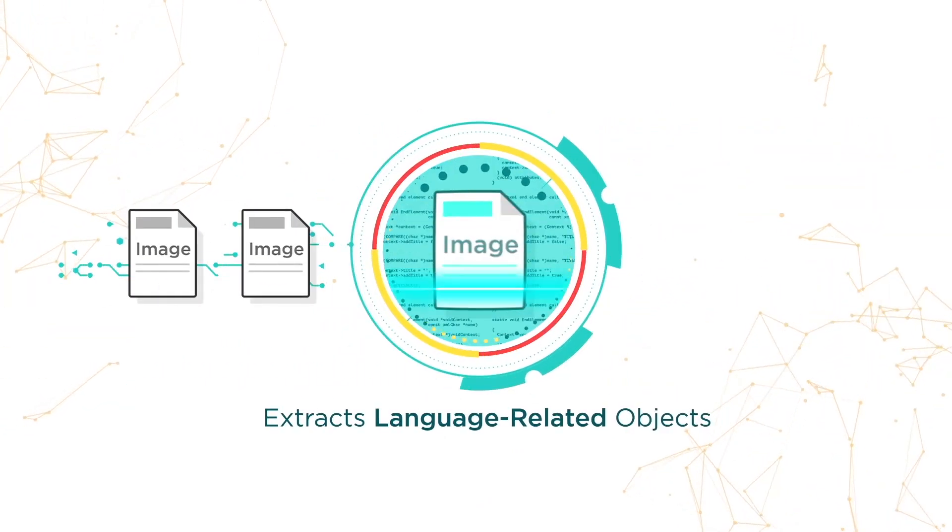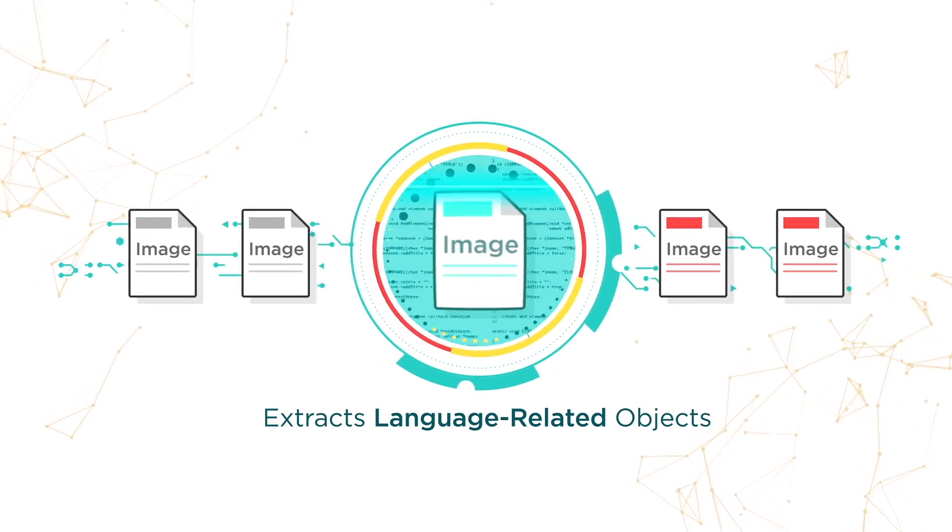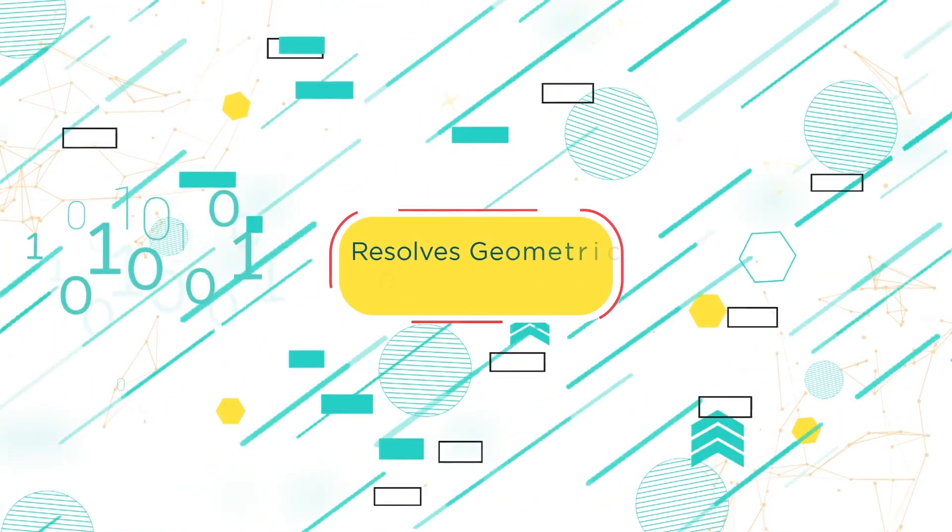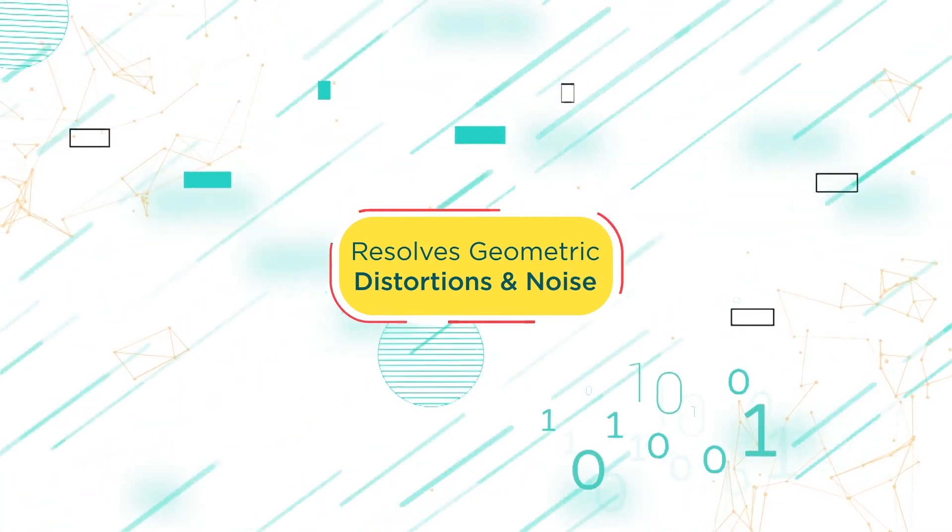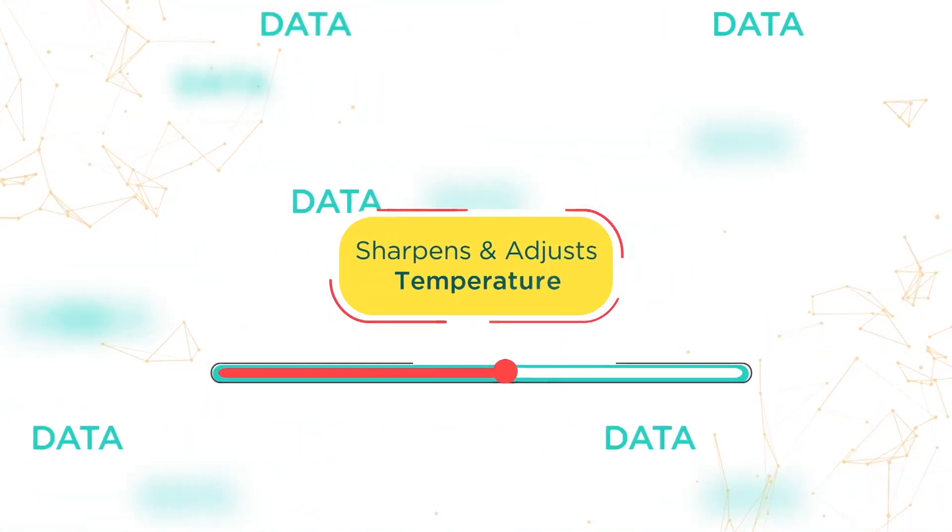Exacto begins with image processing after extracting language-related objects. It resolves geometric distortions and noise from the input while sharpening and adjusting the image temperature. Next,